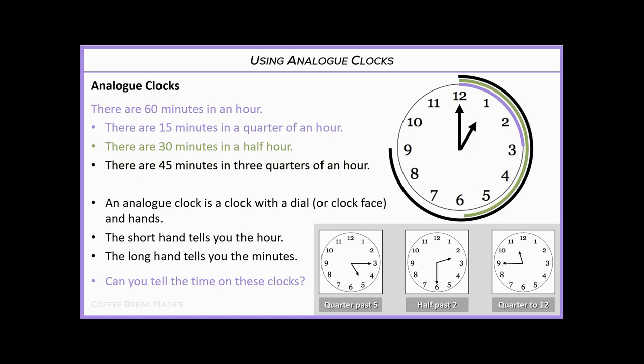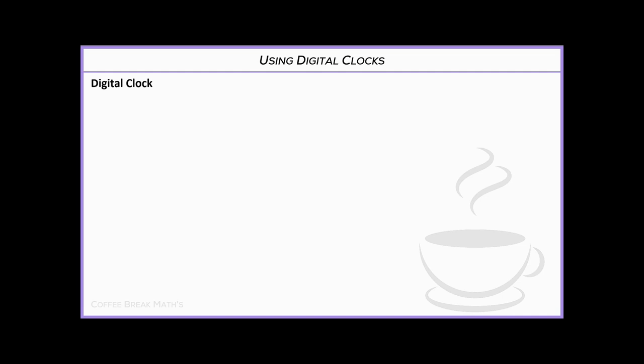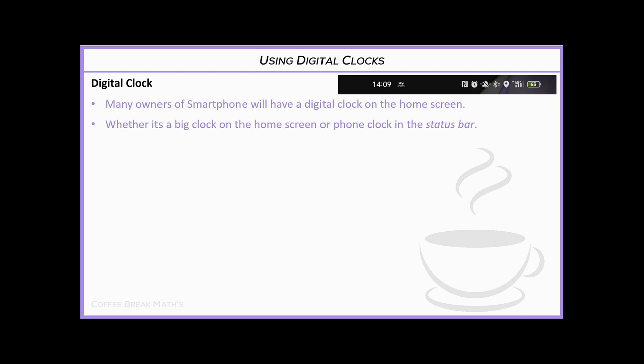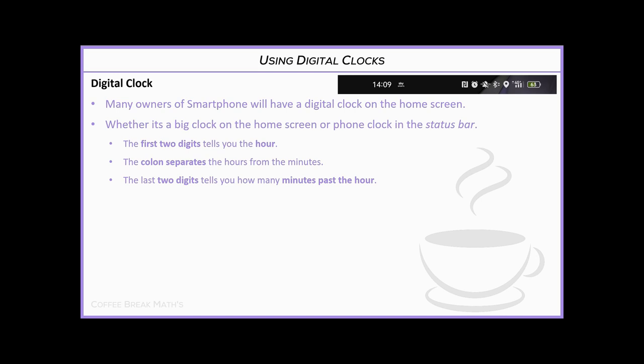Now let's look at digital clocks. You may be used to a digital clock from your smartphone, either in the status bar or displayed large on the screen. What we can see here is 14:09 on that clock. The first two digits tell us the hour — 14 hours into the day. The colon separates the hours from the minutes, and the last two digits tell you how many minutes past the hour.